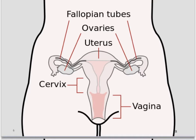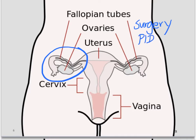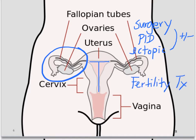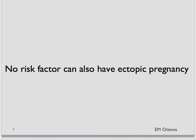Who should we worry about ectopic pregnancy? There are a few risk factors we might gain from history. As a general rule, anything that disrupts the transport of the egg into the uterus will increase the risk of it being fertilized in the tube. Risk factors include scarring of the tube from surgery, a previous pelvic inflammatory disease, and a previous ectopic pregnancy with or without surgery. Use of an intrauterine device also increases risk — even though the patient is less likely to get pregnant, if they do get pregnant the chance of an ectopic is much higher. Patients on fertility treatment are also at risk because they are more likely to have multiple fertilized eggs at the same time. Keep in mind that even patients without risk factors can also have an ectopic pregnancy.